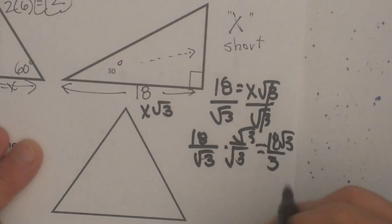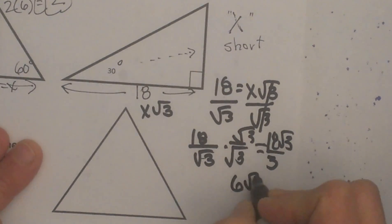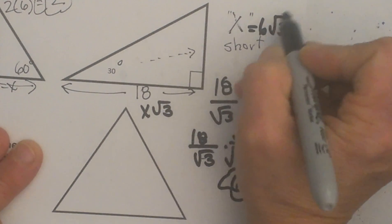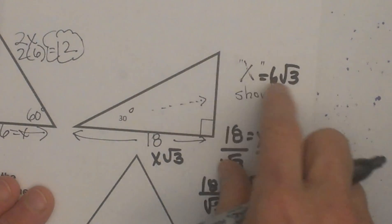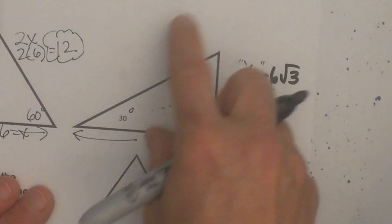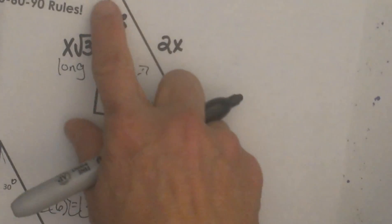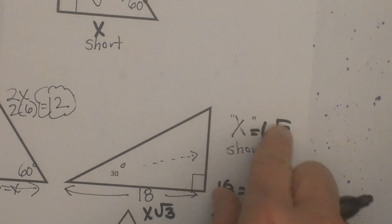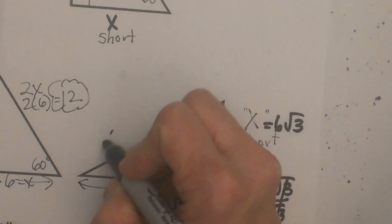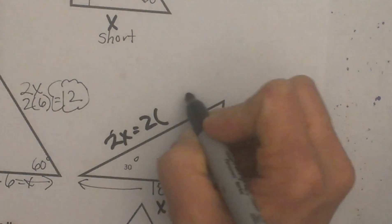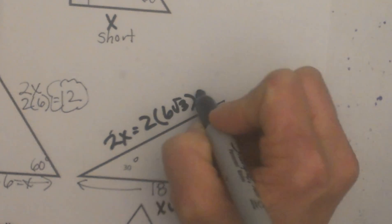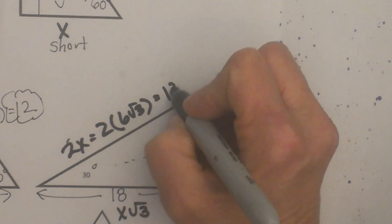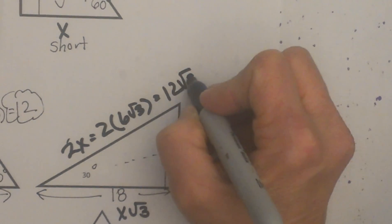That simplifies down to 6 square root of 3, which is my short leg. Now I take that value for x and plug it into the hypotenuse formula. The formula for the hypotenuse is 2 times x, and x is the whole thing — 6 square root of 3. So I plug in 2 times 6 square root of 3. Since 2 and 6 are both outside the radical, I multiply those together.